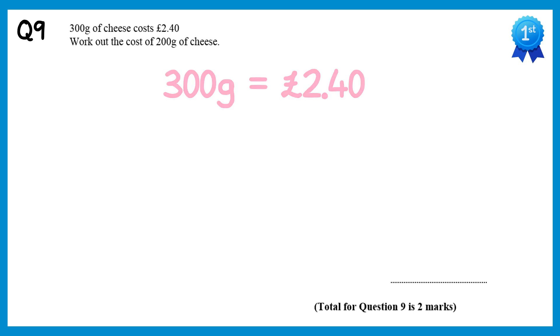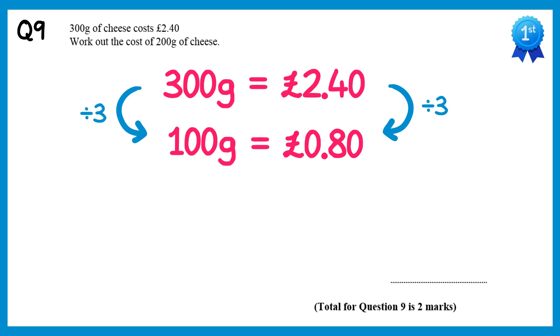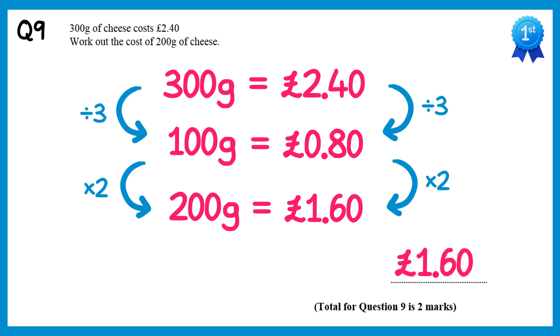In the question we're told that 300g of cheese costs £2.40. If we divide this by 3, we'll get 100g, is 80p. And if we times this by 2, we'll get 200g, is £1.60. Which is the answer to the question.